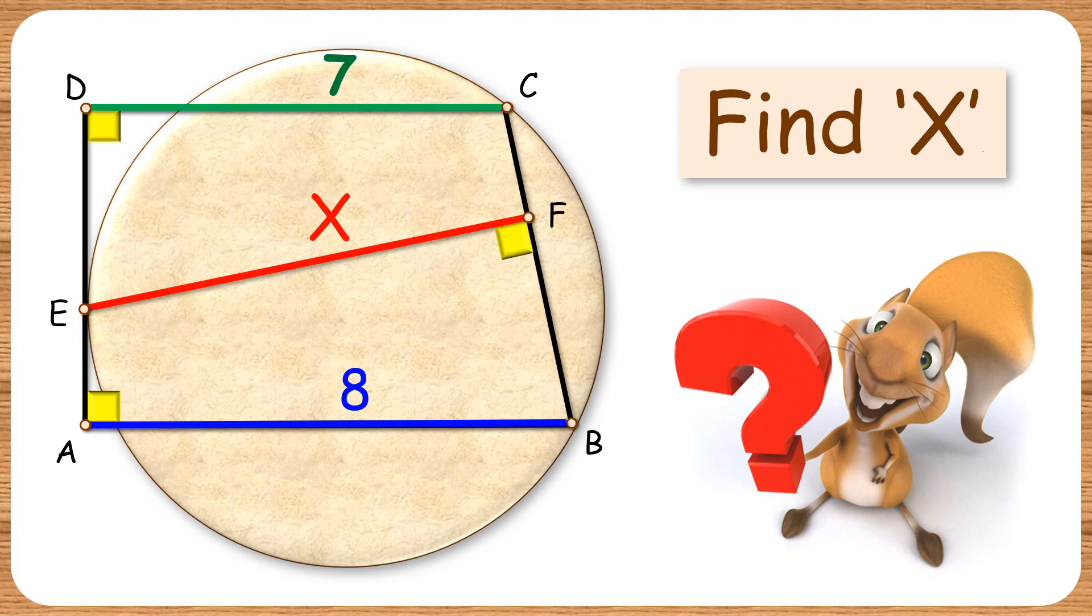In this interesting question given is ABCD is a trapezium with one of the side AD tangent to the circle at point E. With this given dimensions we have to find the length of EF or value of x.